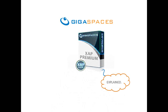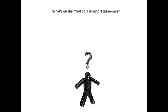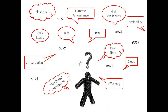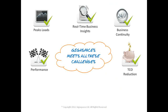GigaSpaces ZAP — end-to-end scaling for enterprise applications with a single platform. IT departments have quite a few challenges to meet, including maintaining application availability and performance, while minimizing costs, and still maintaining business agility to meet changing demands. GigaSpaces meets and exceeds these needs. Let's see where the problems start and how we can resolve them.